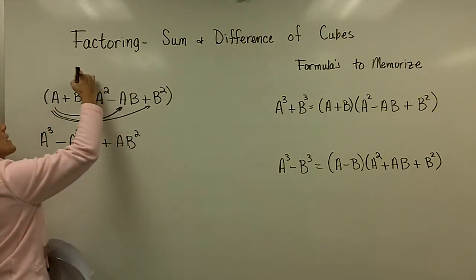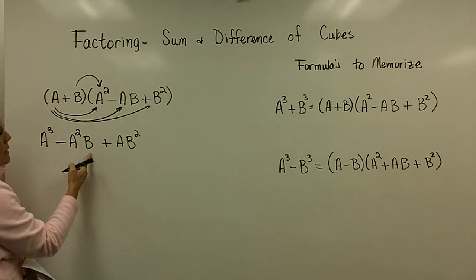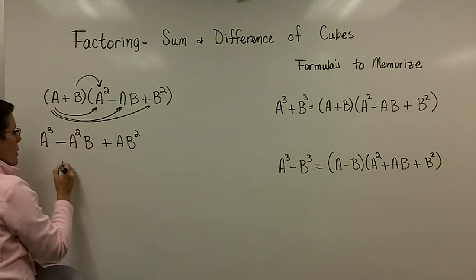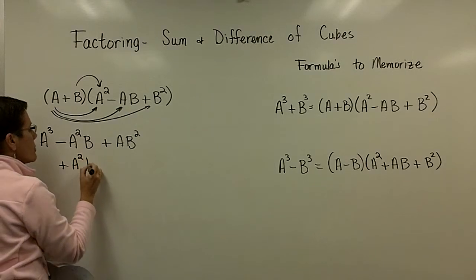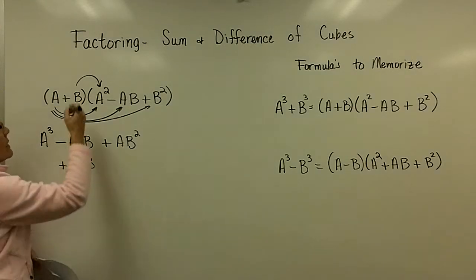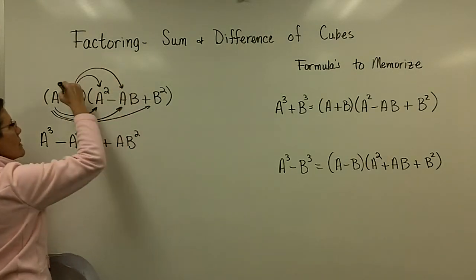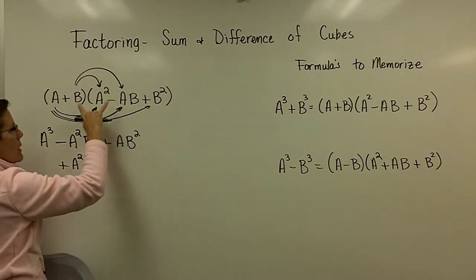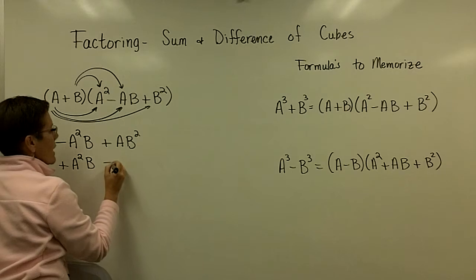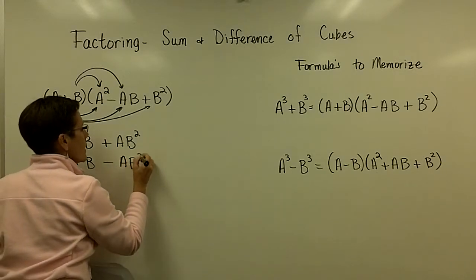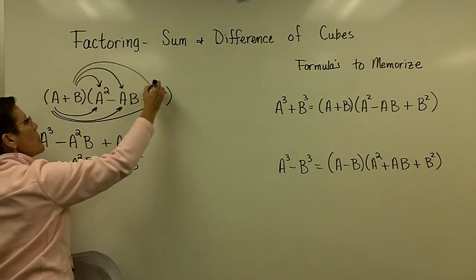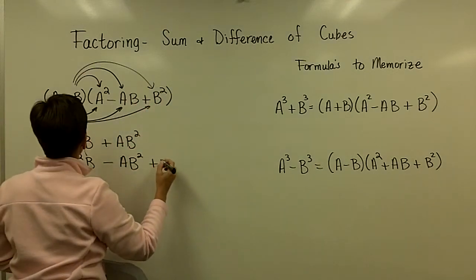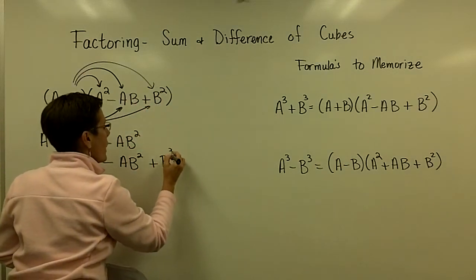And then they had to take b times a squared — that's a like term, so it goes underneath — and then this positive times that minus gives a minus ab squared. And finally, the last terms multiplied together: a positive b times a positive b is a positive b to the third power.